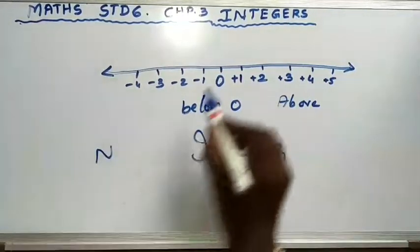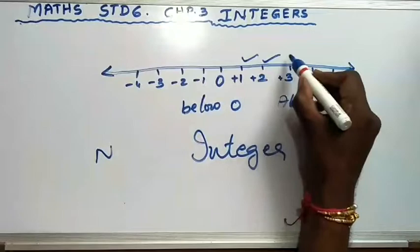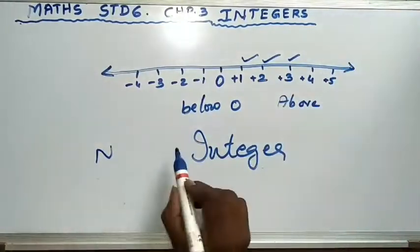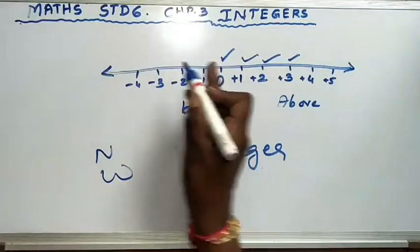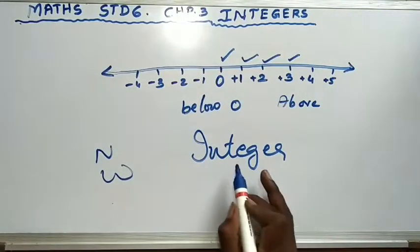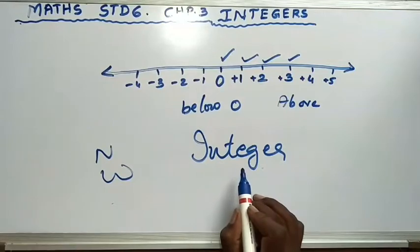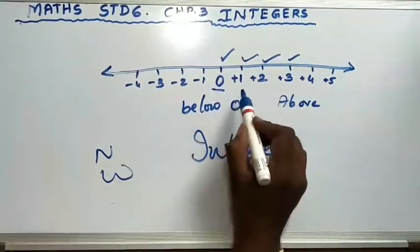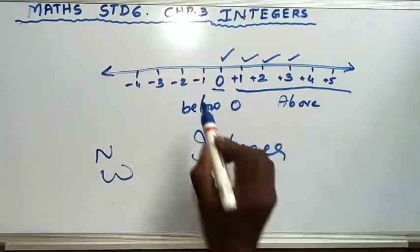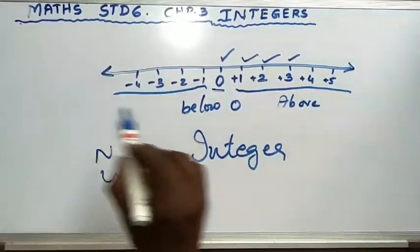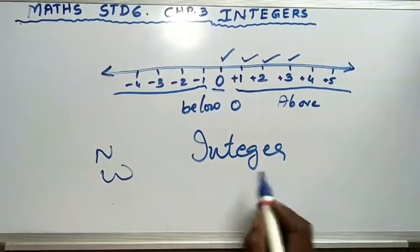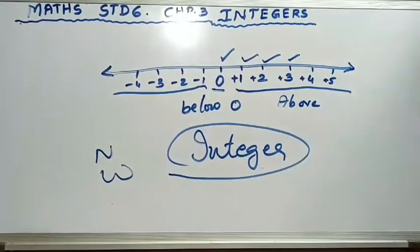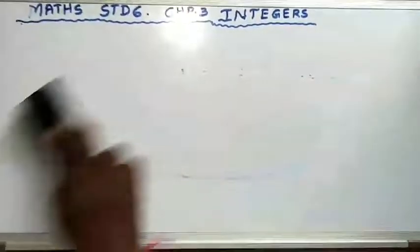Something new you have learned: the integer has a negative side. In natural numbers it starts from 1, 2, 3 and goes on. In whole numbers it starts from 0, 1, 2, 3 and goes on. But the left side is something new which we call integers. So in integers, 0 is there, plus 1, plus 2, plus 3 is there, minus 1, minus 2, minus 3 is there — both minus as well as plus numbers are included in integers.